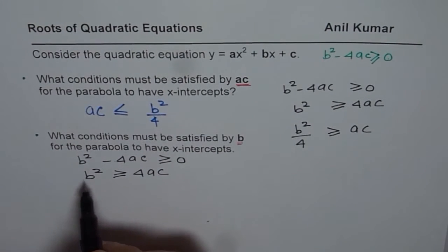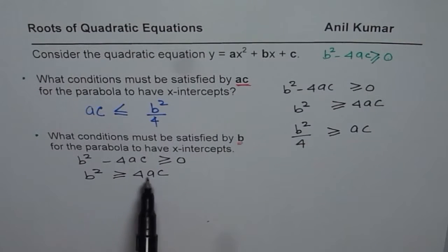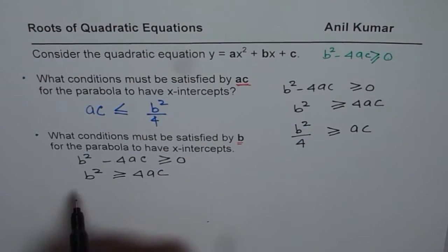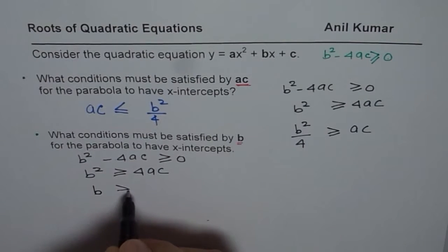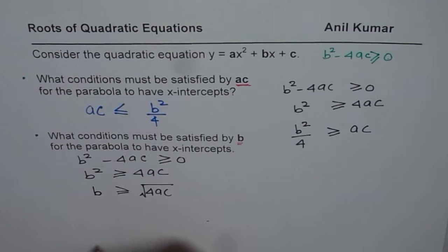Now the question is, what should be b? Whenever you square root, what do you get? You get plus and minus. That is the tricky part. You get plus and minus. Therefore, what should be b when you square root? So b should be greater than or equal to square root of 4ac. That is a plus value. How about the negative value?